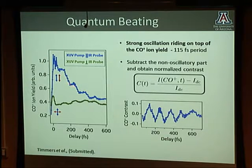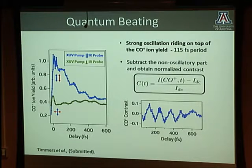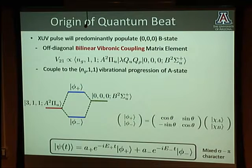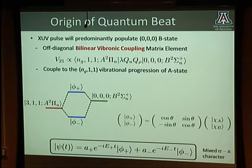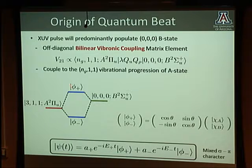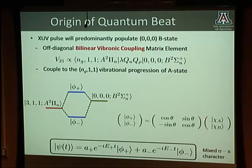Subtracting the slow DC variation and normalizing, we obtain a nice periodic oscillation with a decaying amplitude. The reason for this oscillation goes back to the bilinear coupling between electrons and nuclei via the asymmetric stretch and bending coordinates, which couple the A state (π hole) with the B state (σ hole). This corresponds to an off-diagonal matrix element in the Hamiltonian. If you have this coupling, A and B states are no longer eigenstates—you can re-diagonalize via a representation transformation to new stationary eigenstates ψ₊ and ψ₋.